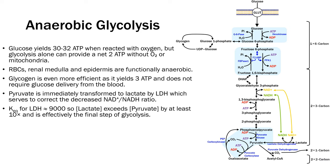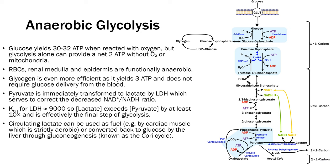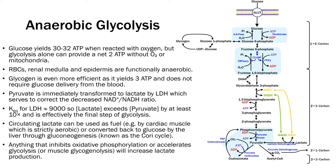The pyruvate concentration is always lower than lactate concentration. Circulating lactate can be used as fuel by cardiac muscle (which is strictly aerobic), or converted back to glucose by the liver through gluconeogenesis — known as the Cori cycle. Anything that inhibits oxidative phosphorylation, accelerates glycolysis, or accelerates muscle glycogenolysis will increase lactate production. Muscle lacks glucose 6-phosphatase and therefore cannot release glucose into the bloodstream, meaning that anything driving glycolysis in muscle must proceed down the glycolysis pathway.